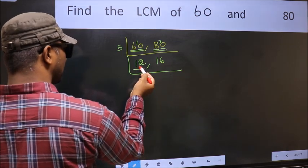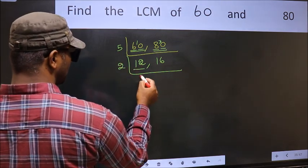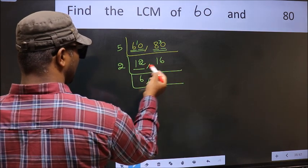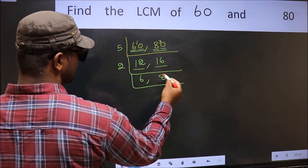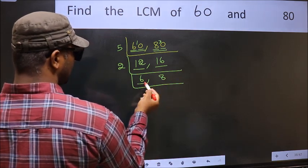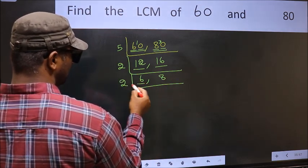Now here we have 12. 12 is 2 times 6. The other number is 16. When do we get 16 in the 2 table? 2 times 8 is 16.